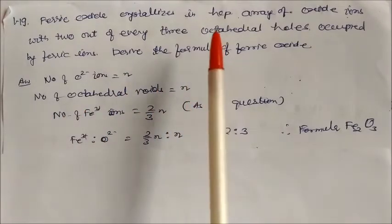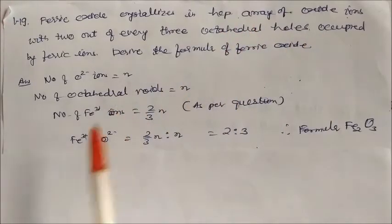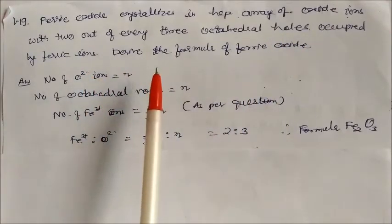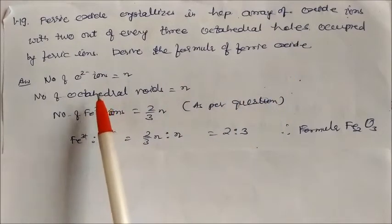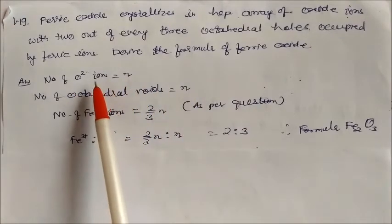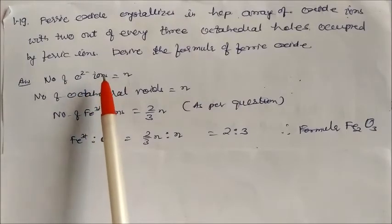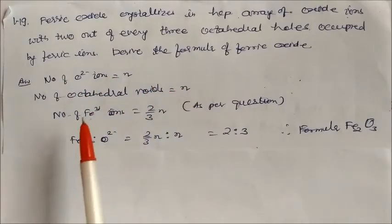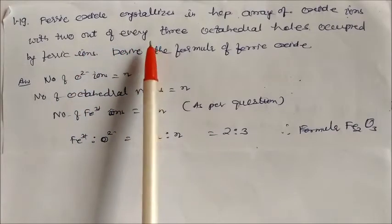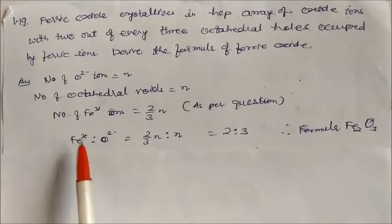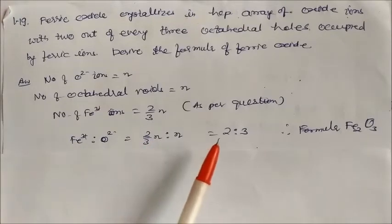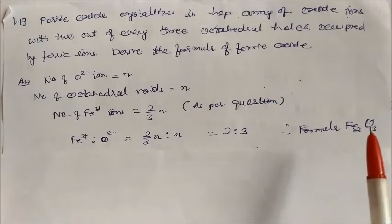Ferric oxide crystallizes in a hexagonal close-packed array of oxide ions with 2 out of every 3 octahedral holes occupied by ferric ions. If the number of oxide ions is N, then the number of octahedral voids is also N. The number of ferric ions = (2/3)N. So the ratio of Fe³⁺ to O²⁻ is (2/3)N : N = 2:3. Therefore, the molecular formula is Fe₂O₃.